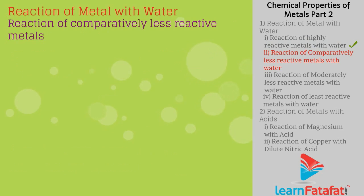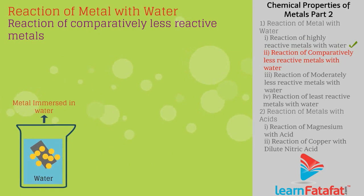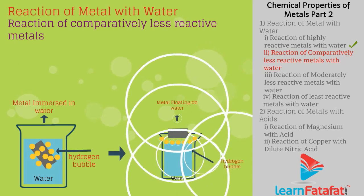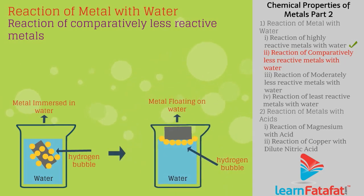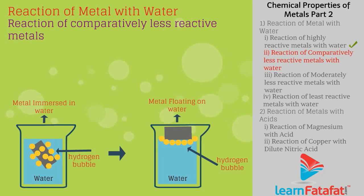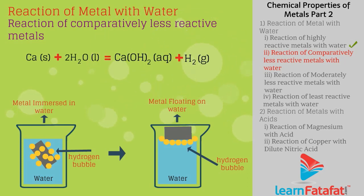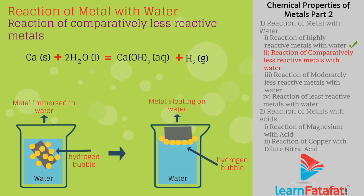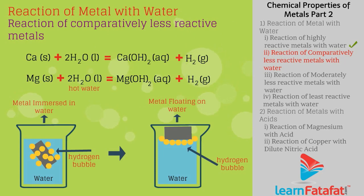Reaction of comparatively less reactive metals. When calcium reacts with water, it produces calcium hydroxide, and when magnesium reacts with water, it produces magnesium hydroxide. In both reactions, the hydrogen gas released sticks to the metal surface, so the metal floats on water. For example: Ca + 2H2O gives Ca(OH)2 + H2. Mg + 2H2O gives Mg(OH)2 + H2.